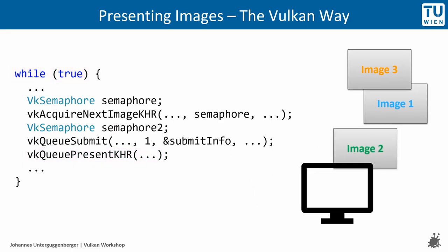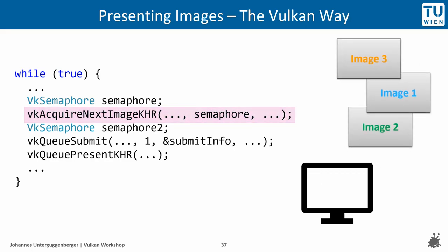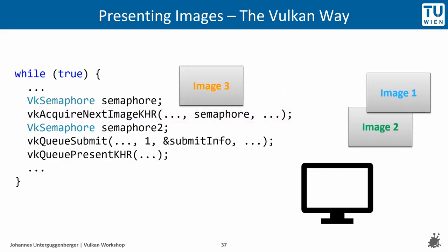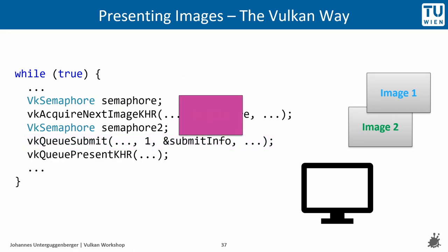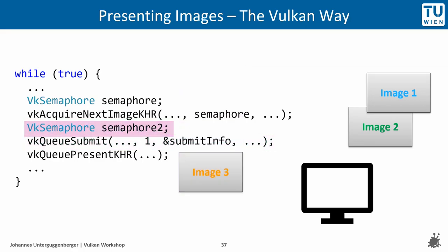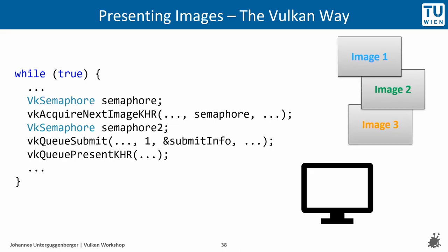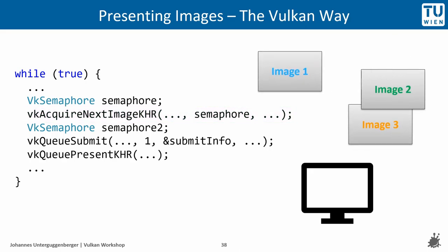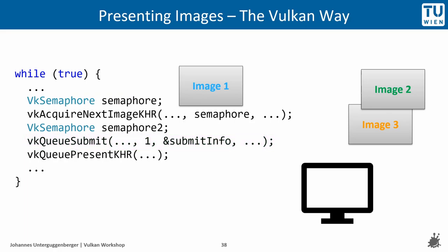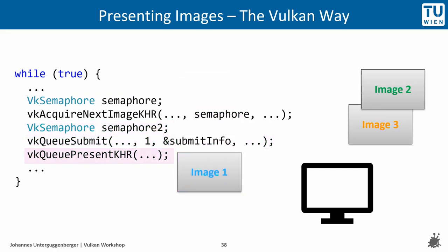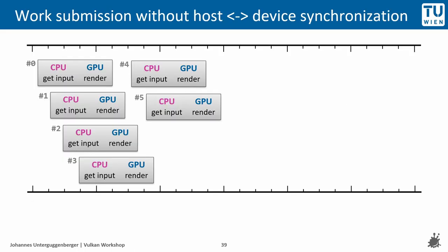And again, without any wait, the next loop iterations perform the same actions. At some point, resources will be used concurrently and race conditions will occur.